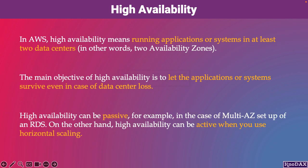High availability can be passive — for example, in the case of a multi-AZ setup of an RDS. On the other hand, high availability can be active when you use horizontal scaling.